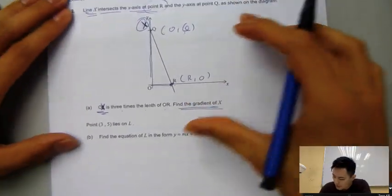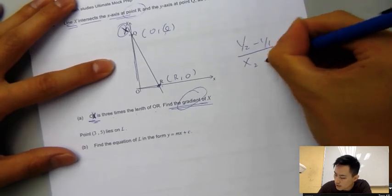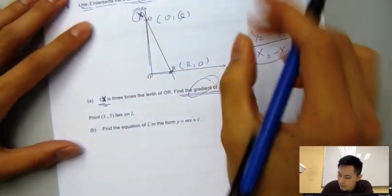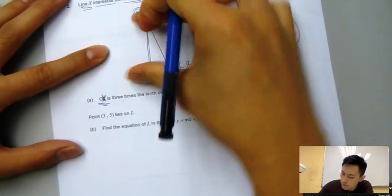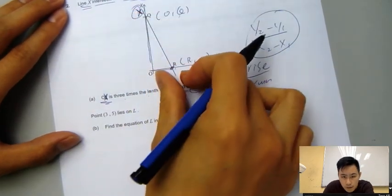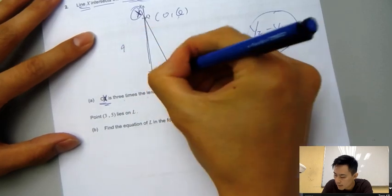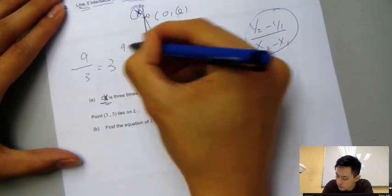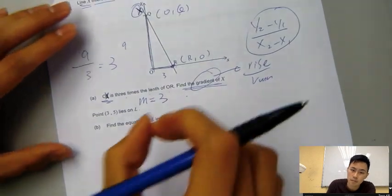Many students get stuck at this question because normally how they find the gradient is y2 minus y1 over x2 minus x1, but this time you're not even given the coordinate. So how do you find the slope? You need to understand the concept of the gradient. It's rise over run, basically vertical distance over horizontal distance. If that is 3 times of the OR, 3 over 1. It can be like 9 and 3, right? 9 over 3, you get 3. So you know the slope is M equals 3.